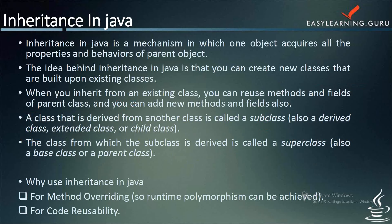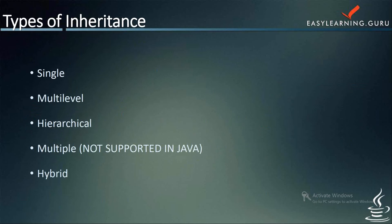When we talk about the types of inheritance, we basically have various types: single, multi-level, hierarchical, multiple inheritance, and hybrid inheritance.